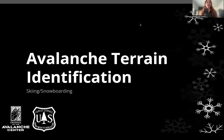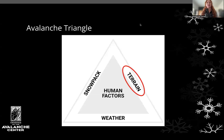Here we're going to talk about avalanche terrain identification for skiing and snowboarding. At this point, you're all familiar with the avalanche triangle. We're going to focus on the terrain element. Avalanche terrain is a simple item that we can choose to change as far as our exposure to it.